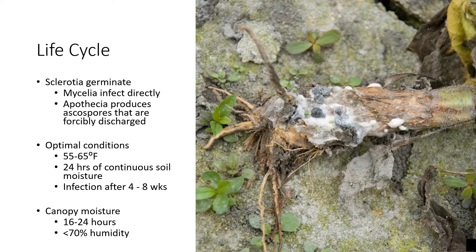For spores ejected into the canopy, there must be moisture within that canopy — a high relative humidity or leaf wetness at the very least. Usually that is humidity above 70 percent, or leaf wetness such as from rain or overhead irrigation.